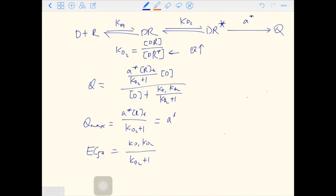Qmax can be written as alpha star Rt over Kd2 plus 1. We can also rewrite EC50 as Kd1 times Kd2 over Kd2 plus 1. So these two terms can be considered the modifiers of the Clark's model.